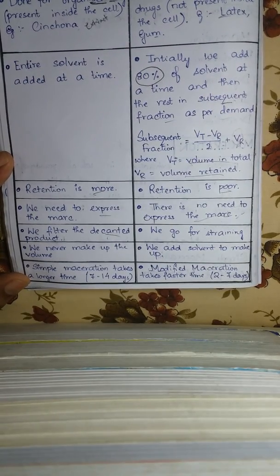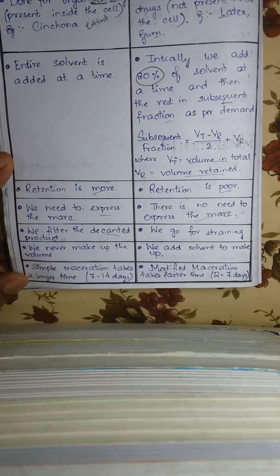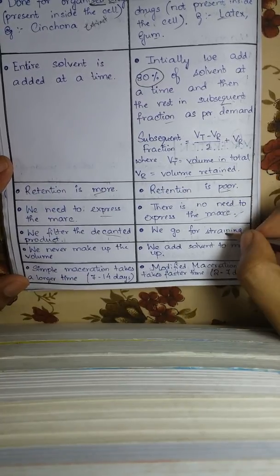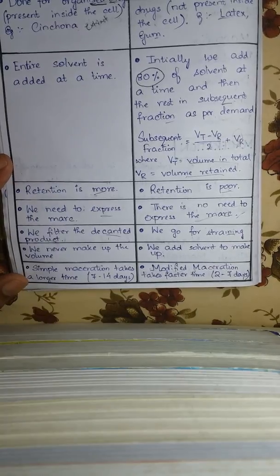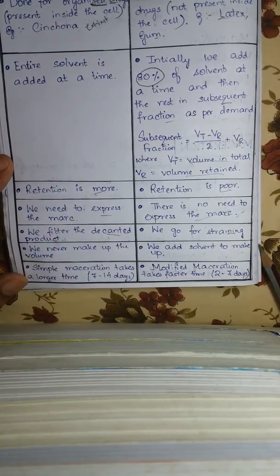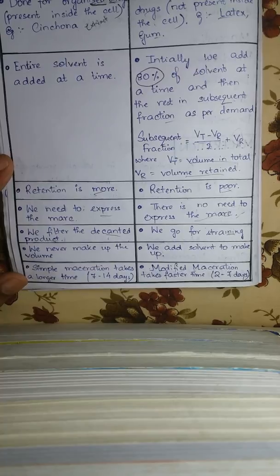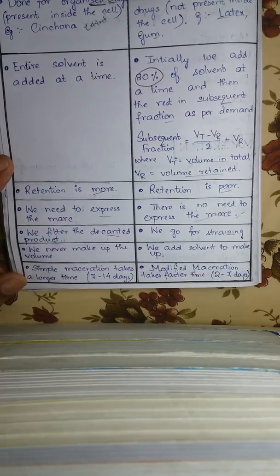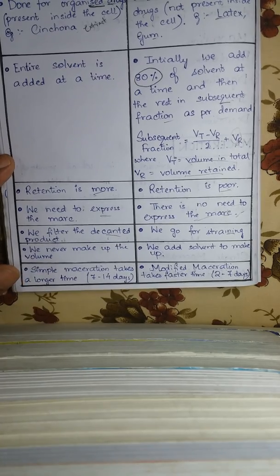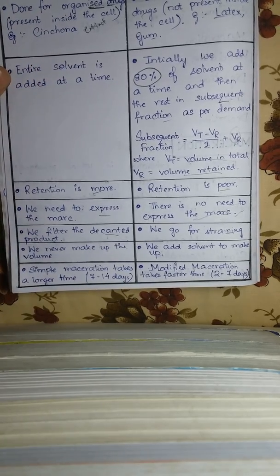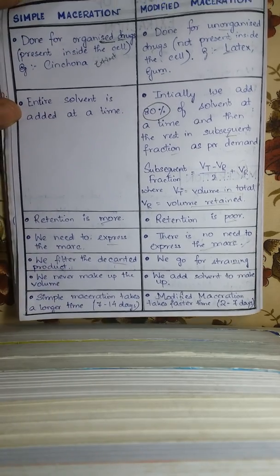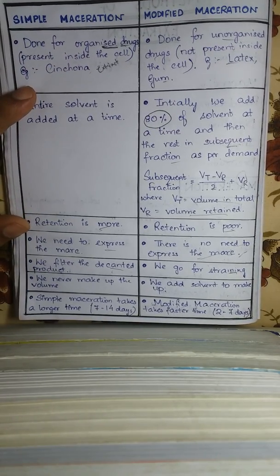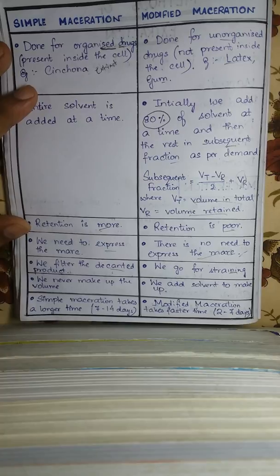In simple maceration, we filter the decanted product so that unwanted material is removed. In modified maceration, straining is done — using a piece of cloth to strain the liquid — to obtain the ultimate product.